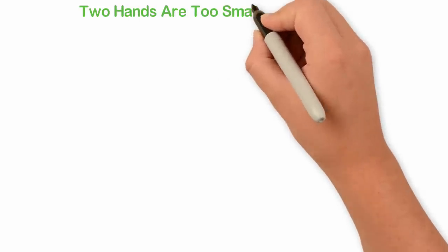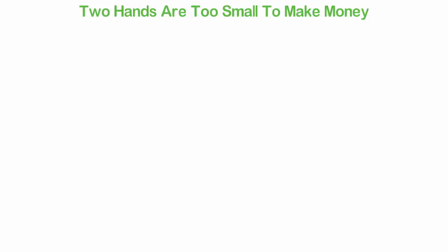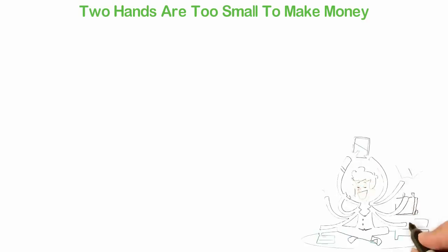Two hands are too small to make money. Another issue with getting a job is that you can't get other people to do it for you. Let me show you what I mean.